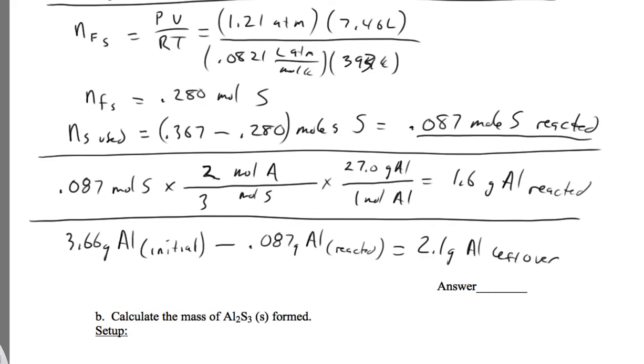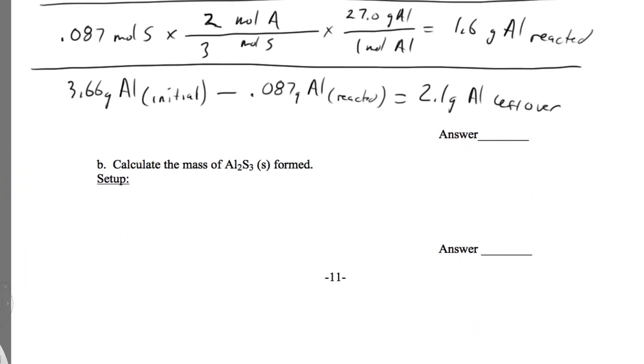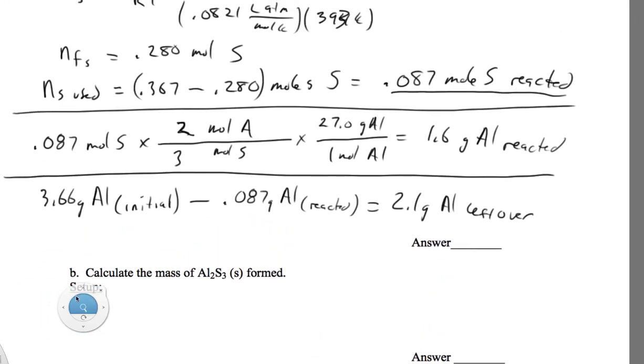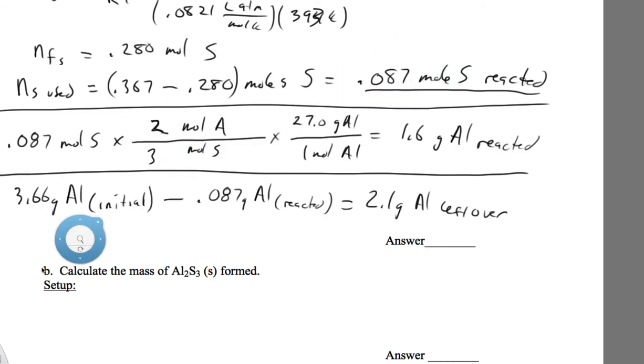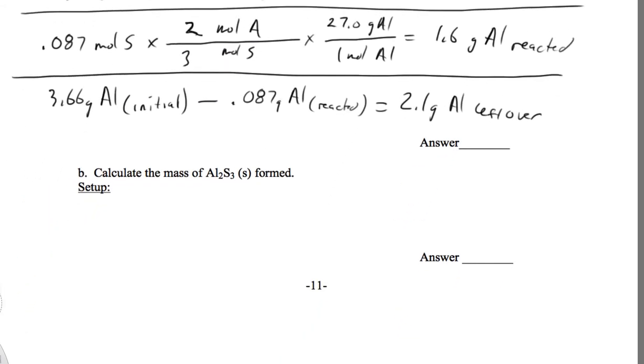Now it says in part B calculate the mass of aluminum sulfide formed. So the easiest way would be to start with moles. I'm going to start with that 0.087 moles of sulfur rather than convert grams back to moles. So I'm going to start with 0.087 moles of sulfur reacted, and I'm going to multiply that by my mole ratio.